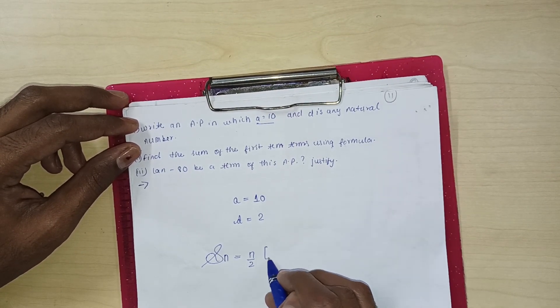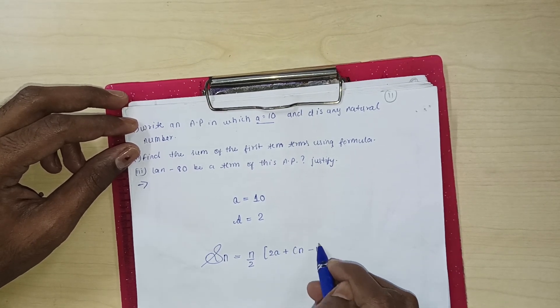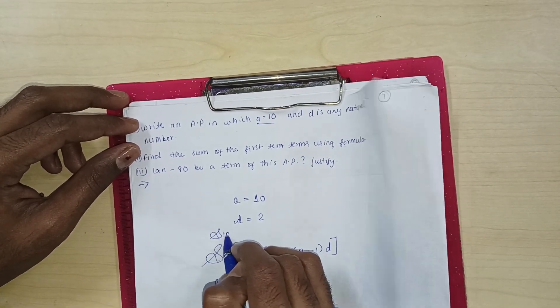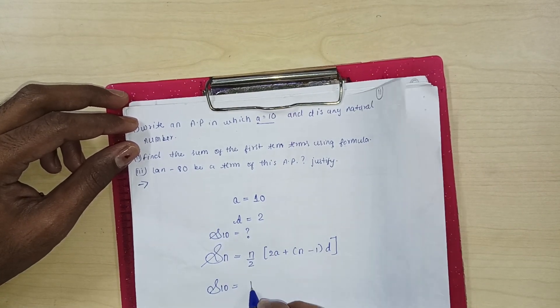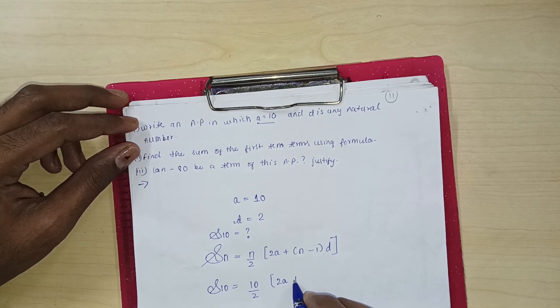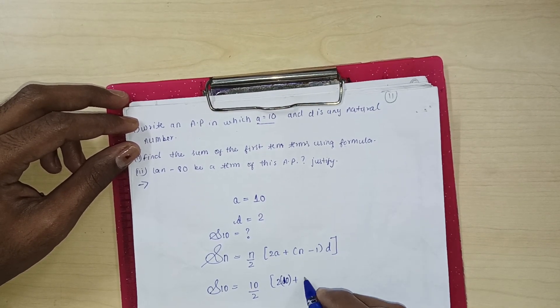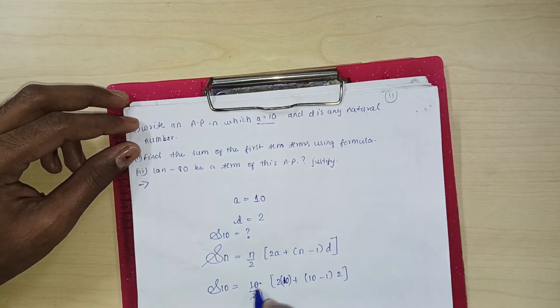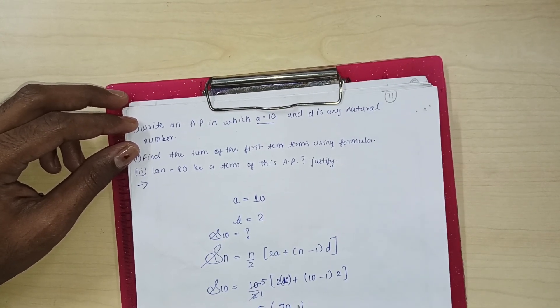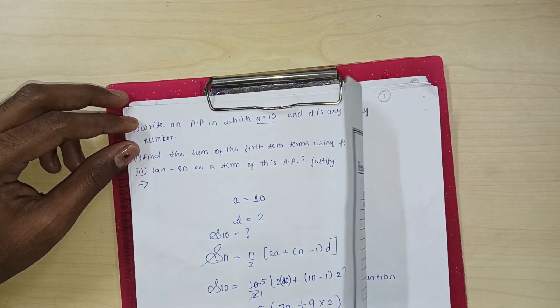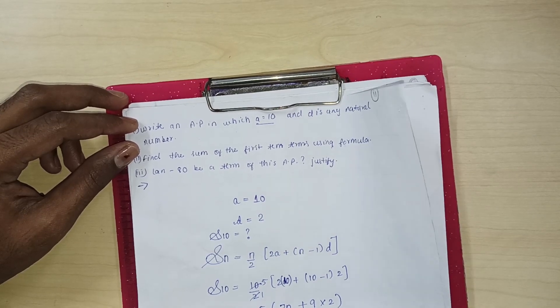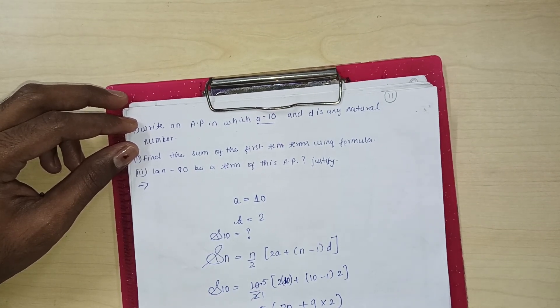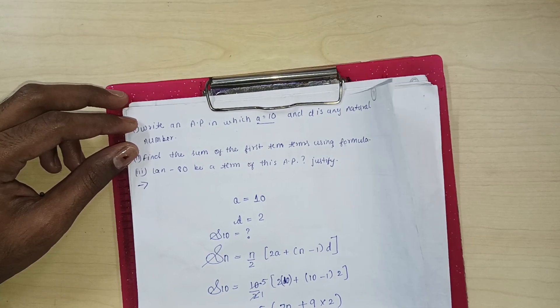S_n = n/2[2a + (n-1)d]. You know the bracket of division, addition, multiplication and subtraction. So first we multiply, 20 plus 18.